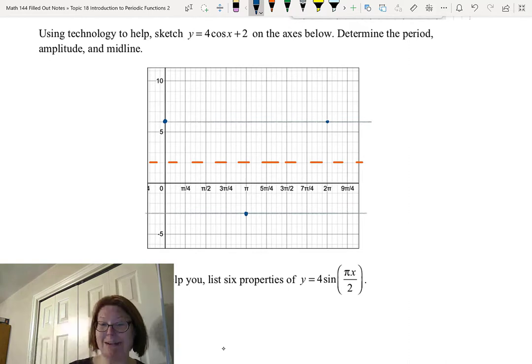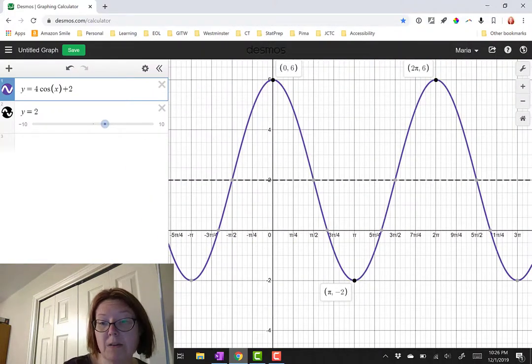Notice I can place those easily on my maximum minimum lines there. I'd like to find just a few other values to get a nice graph from this, and let's plot the points that are along the midline. So we have a point at pi over 2 comma 2 and 3 pi over 2 comma 2.